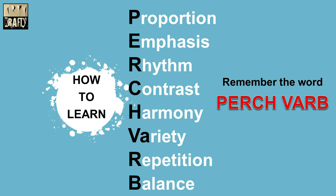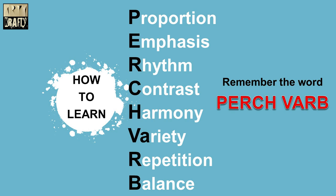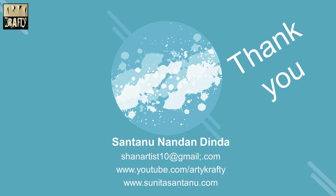Dear students, there is a trick to remember these points. Take the first or second alphabet and join them to create a word like PERCHVARB: P for Proportion, E for Emphasis, R for Rhythm, C for Contrast, H for Harmony, VA for Variety, R for Repetition, and B for Balance. This is all about the Principles of Art.